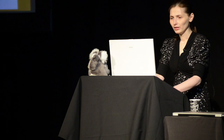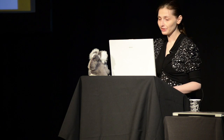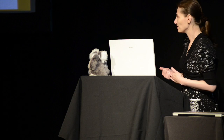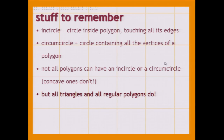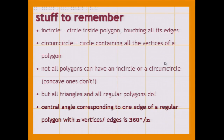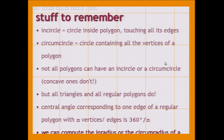Stuff to remember: the in-circle is the circle inside the polygon touching all its edges. The circum-circle is a circle containing all the vertices of the polygon. Not all polygons can have an in-circle or a circum-circle — for example, concave polygons don't have either. A rhombus doesn't have a circum-circle, and a rectangle doesn't have an in-circle. But all triangles and all regular polygons do. The central angle corresponding to one edge of a regular polygon with n vertices is 360 over n. And we can compute the in-radius or the circum-radius if we know the edge length of a regular polygon.